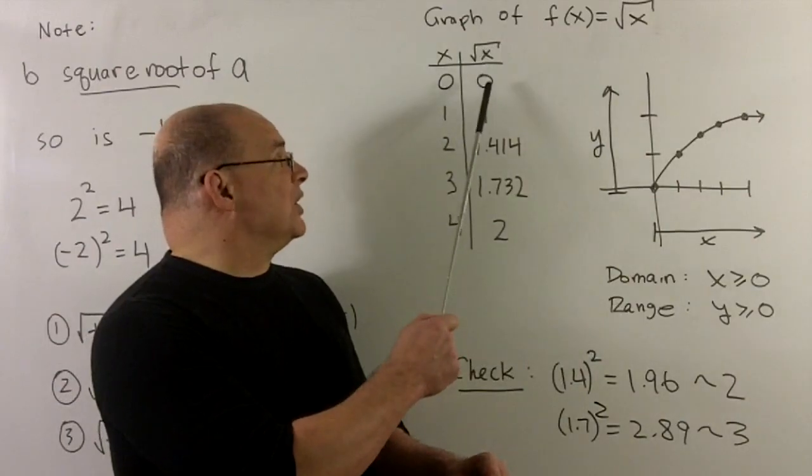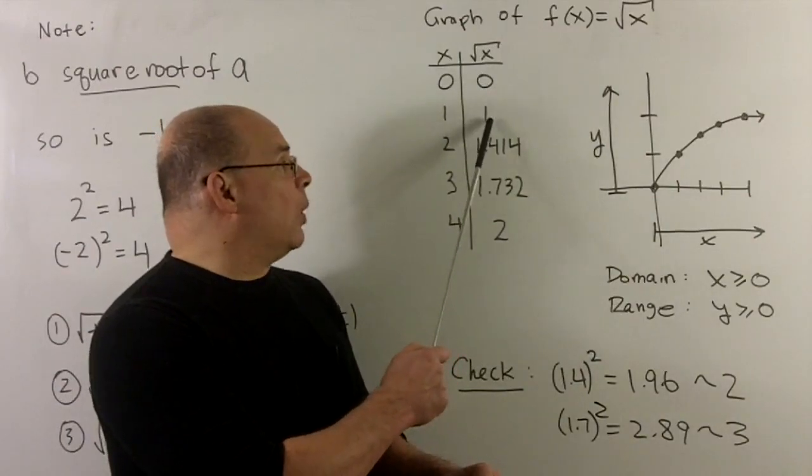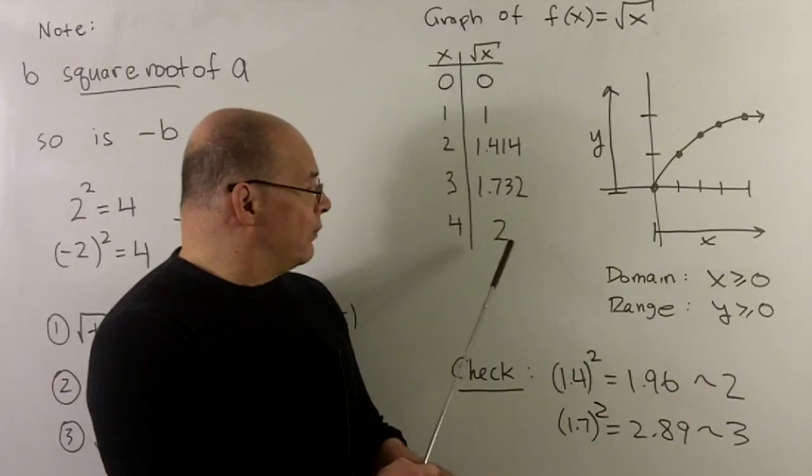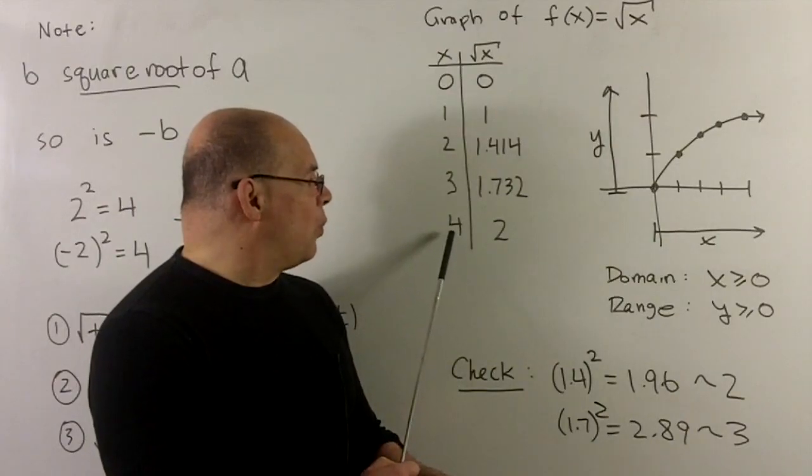put it into square root of x and see what we get. If zero goes in, square root of zero is zero, square root of one is one. And then for nice numbers, square root of four is two.